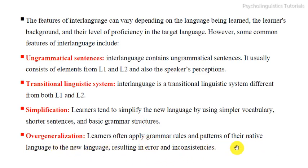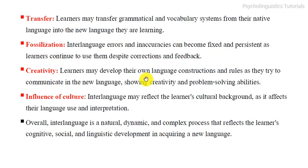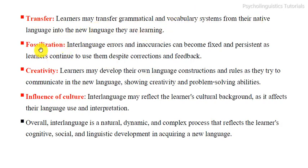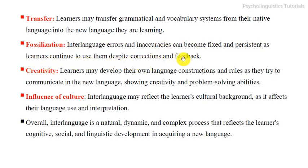Fifth is transfer. Learners may transfer grammatical and vocabulary systems from their native language into the new language they are learning. Sixth is fossilization. Interlanguage errors and inaccuracies can become fixed and persistent as learners continue to use them despite correction and feedback.